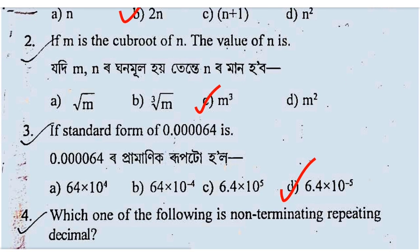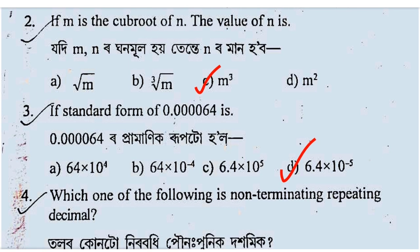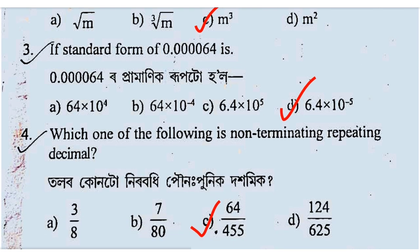The third question — the second option is CRD2. The second option is 0.00000064. The second option is D2 is 6.4 into 10 to the power minus 5.